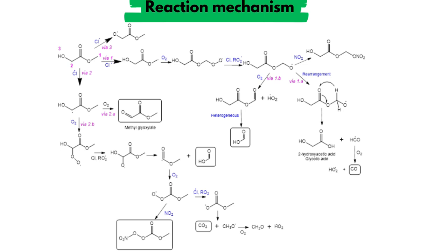From the kinetic analysis and the products observed by infrared spectroscopy, the figure shows the proposed reaction mechanism. As can be seen, the chlorine atom can react via pathways 1, 2, and 3, with pathway 3 being negligible. After reacting with chlorine atoms, the radical formed can react with oxygen. Subsequently, it can rearrange, react with oxygen, and undergo other reactions. The products observed by infrared spectroscopy are boxed.